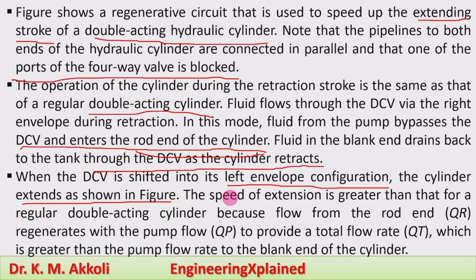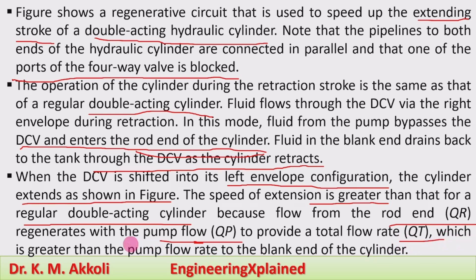For the regeneration: when the DCV is shifted to the left envelope configuration, the cylinder extends as shown in the figure. The speed of extension is greater than that for a regular double acting cylinder because flow from the rod end QR regenerates the pump flow QP, providing the total flow rate QT which is greater than the normal flow rate at the blank end of the cylinder, therefore the speed is increased.